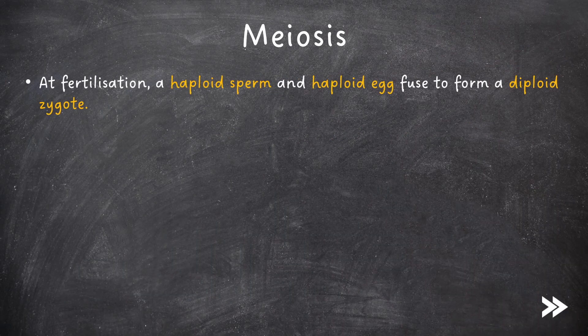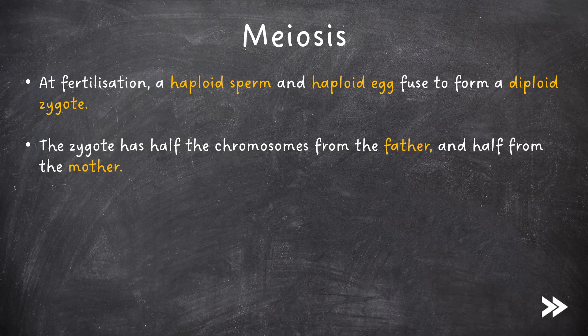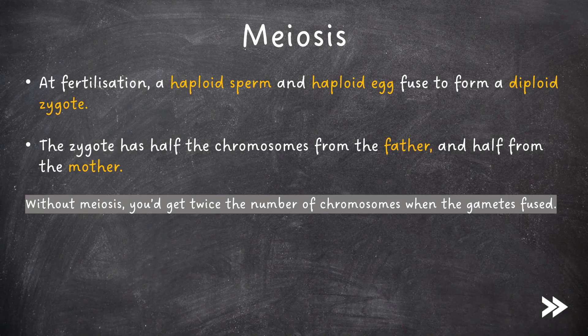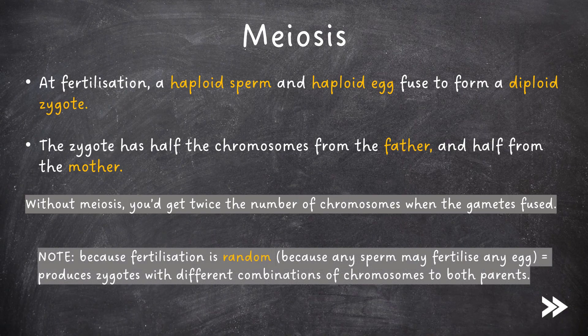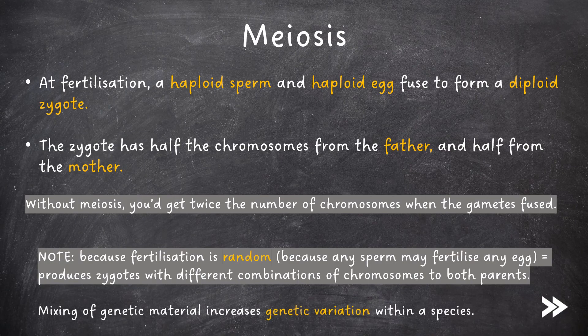At fertilisation, a haploid sperm and a haploid egg fuse to form a diploid zygote. The zygote has half the chromosomes from the father and half from the mother. Without meiosis, you would get twice the number of chromosomes when the gametes fuse. Note that because fertilisation is random — any sperm may fertilise any egg — zygotes are produced with different combinations of chromosomes to both parents, which increases genetic variation within a species.